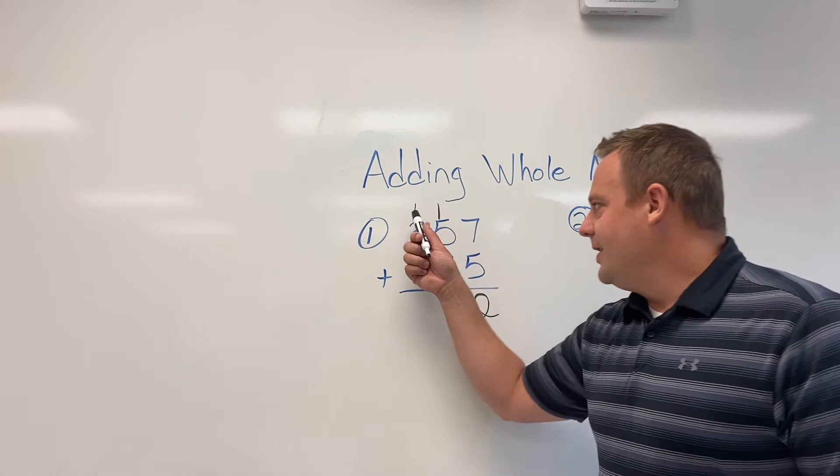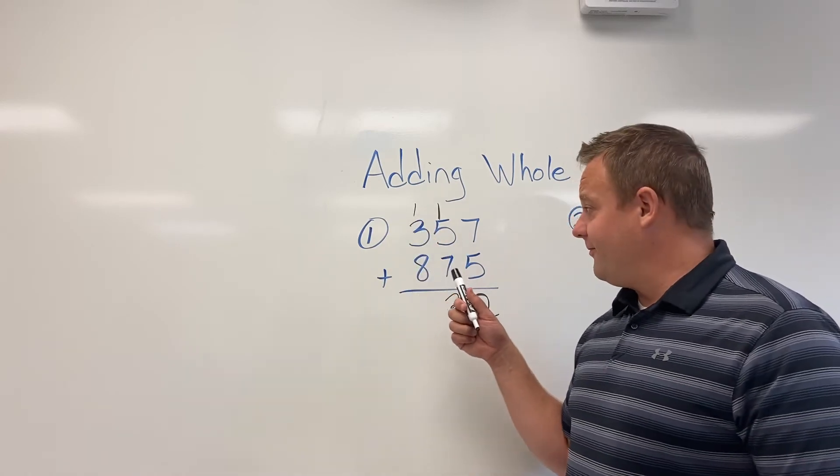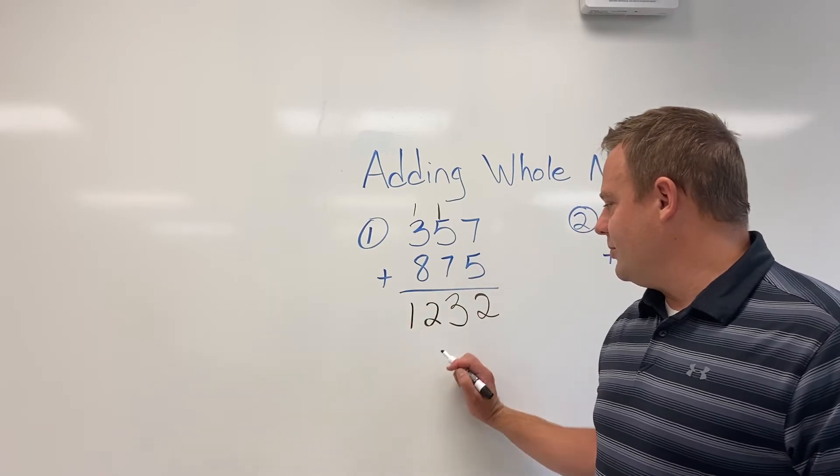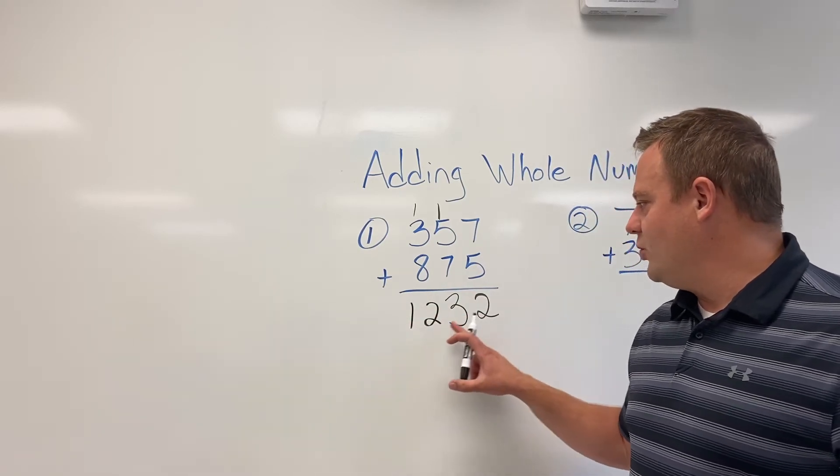Of course, really that's a hundred. So one plus three is four or like 400 plus eight is 12. So we have an answer of 1232.